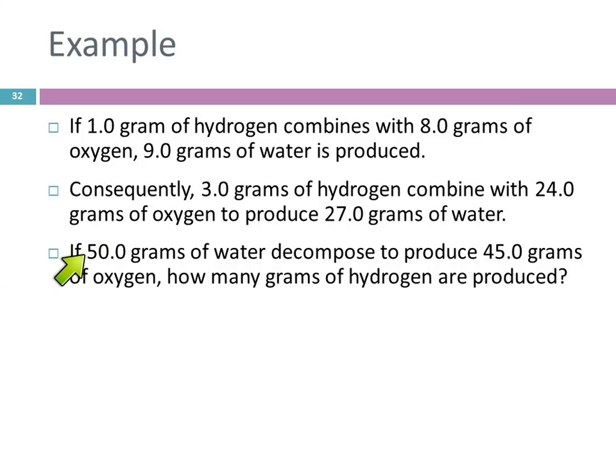So here's the question then. If 50 grams of water decomposes to produce 45 grams of oxygen, how much hydrogen would be produced?